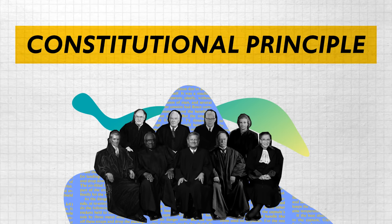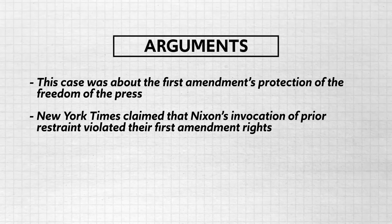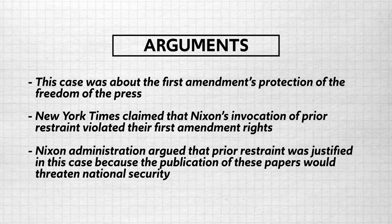Namely, our government is lying to us and those lies are costing thousands of lives. Well, it only took one publication for the Nixon administration to send an order to the papers to cease publication of top-secret documents, because it could threaten national security. This was a procedure called prior restraint — in other words, the Nixon administration tried to keep the papers from publishing these documents before they were printed. And that's how this case wound up before the Supreme Court. This is pretty clearly a First Amendment case, specifically a case about the First Amendment's protection of the freedom of the press. The New York Times claimed that Nixon's invocation of prior restraint violated their First Amendment rights, while the Nixon administration argued that prior restraint was justified because the publication of these papers would threaten national security.